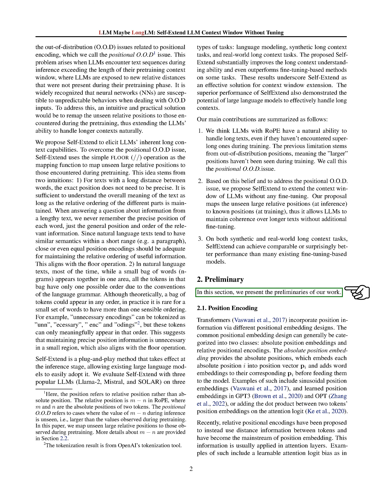Let's start by discussing the basics of our research. We're looking at how transformers, a type of machine learning model, use position information. There are two main ways they do this: absolute position embeddings and relative positional encodings. Absolute position embeddings give the exact positions of elements in a sequence, added to word embeddings before being fed into the model. Examples include sinusoidal position embeddings and learned position embeddings used in models like GPT-3. On the other hand, relative positional encodings use the distance between elements in a sequence, and have become the more popular method, often used in attention layers. Examples include learnable attention biases used in T5 and Transformer-XL, and a fixed linear attention decay called ALiBi. Our work is based on the rotary position embedding (RoPE) method.